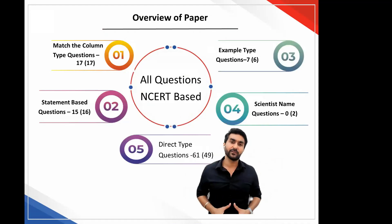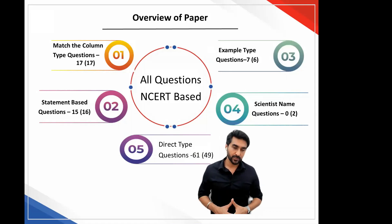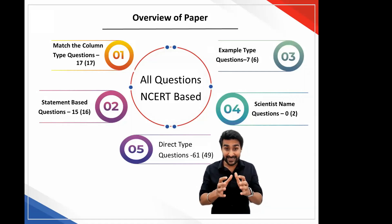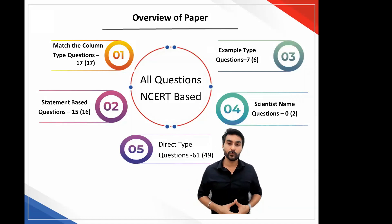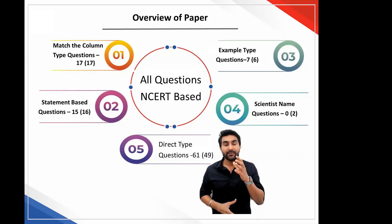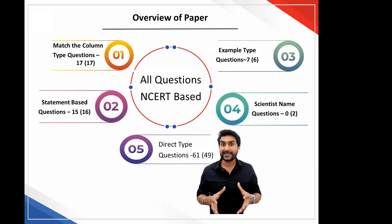If you talk about the type of questions asked, you had match the column type questions which were 17 in number — the exact same figure as last year. Even last year, there were 17 match the column questions. But if you ask me, the match the column type of questions this year were comparatively more easy.